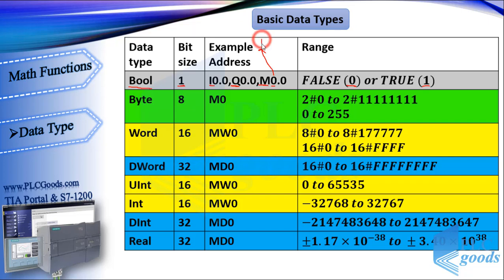If you remember, the first number refers to the byte number of memory, and the second number determines its bit number, which can be 0 to 7.